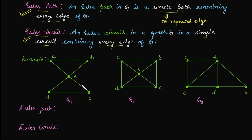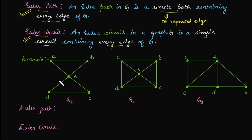Now we are going to find whether three graphs have an Euler path, an Euler circuit, or both. There is a trick: can you reconstruct this graph without lifting your pen? If you can, it has either an Euler circuit or an Euler path. If the endpoints are the same while reconstructing, it is an Euler circuit; if the endpoints are different, it is an Euler path.